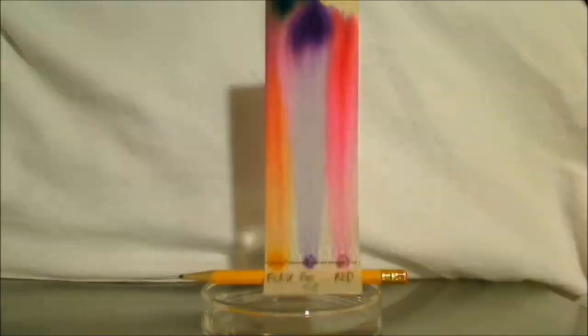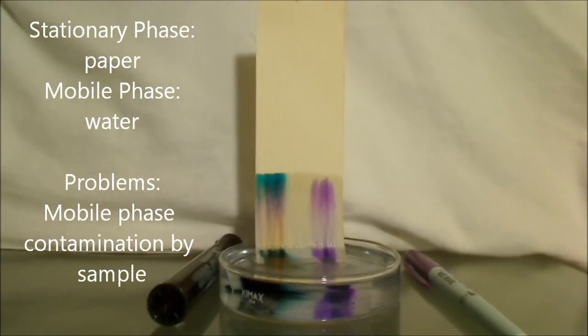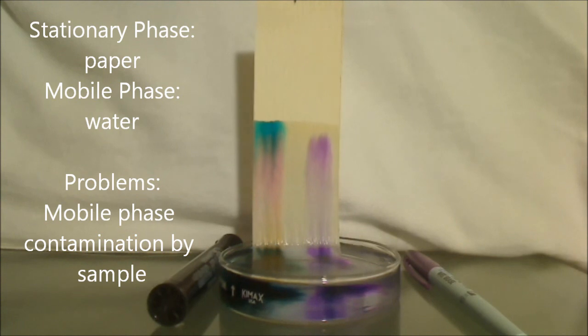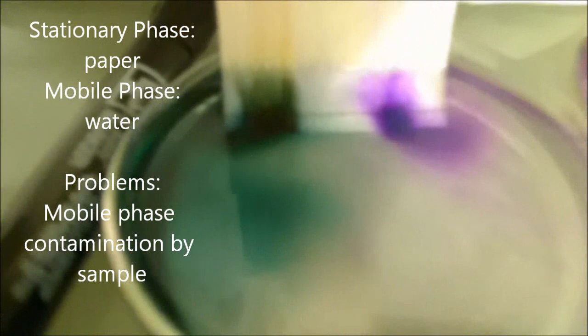Other things that can go wrong is if you put the dots underneath the mobile phase when it's in the container, then the dots will spread out in the mobile phase and contaminate it. So you're not going to get very good results.